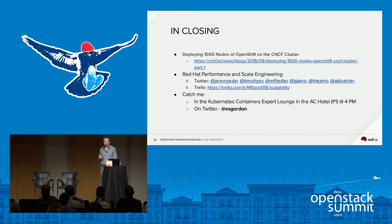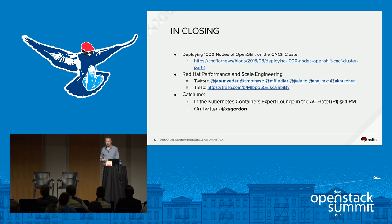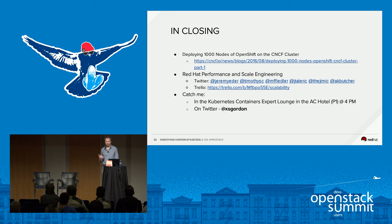A lot of this content is from a blog post on deploying 1,000 nodes of OpenShift on the CNCF cluster, which has more information including links to PRs. I also want to call out the work of the Red Hat Performance and Scale Engineering team — all of these folks are available on Twitter. Their Trello board for the scalability team is actually open, so you can track what they're doing, see what challenges they're setting themselves, and how their work is progressing. There's also a Kubernetes container expert lounge here at the summit, staffed by folks from Google and others throughout the week for Kubernetes-related questions.